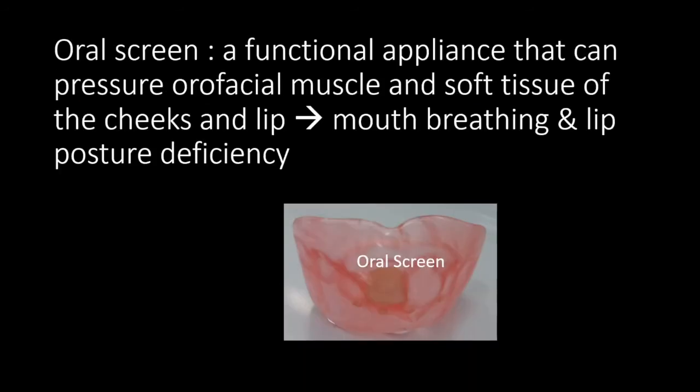Overcoming bad habits of mouth breathing is done by using an oral screen. The oral screen is a functional tool to apply the pressure from orofacial muscles and soft tissue on the cheeks and lips to prevent mouth breathing and lip posture deficiency.